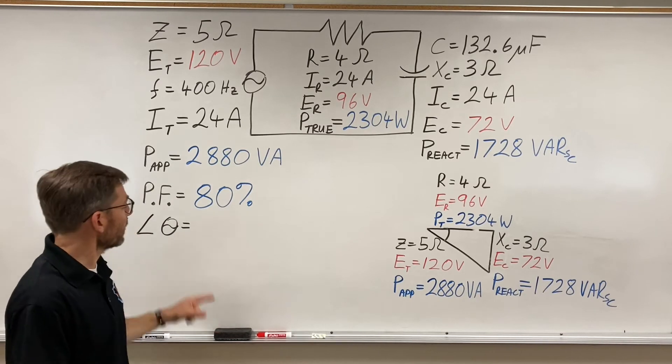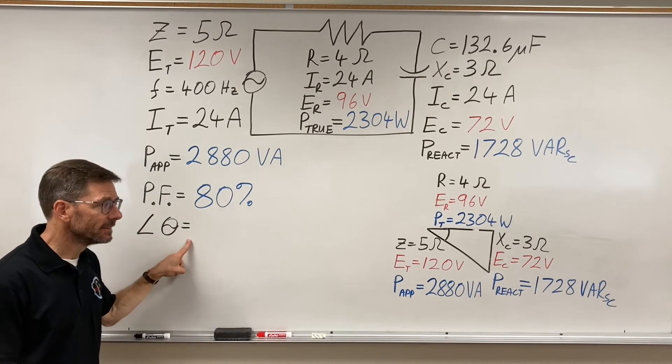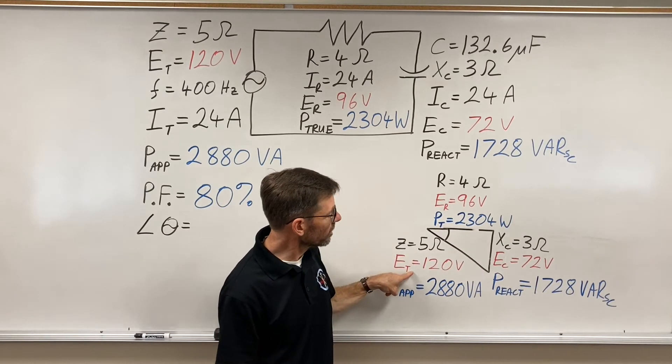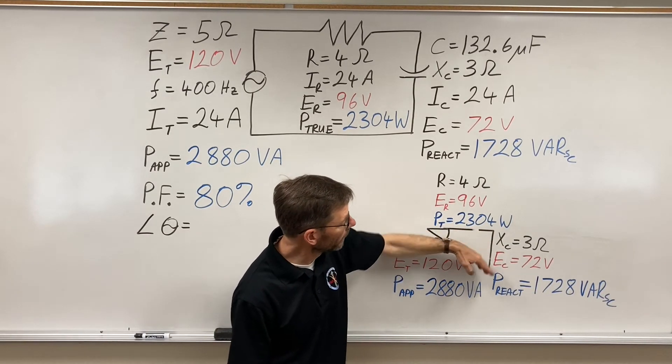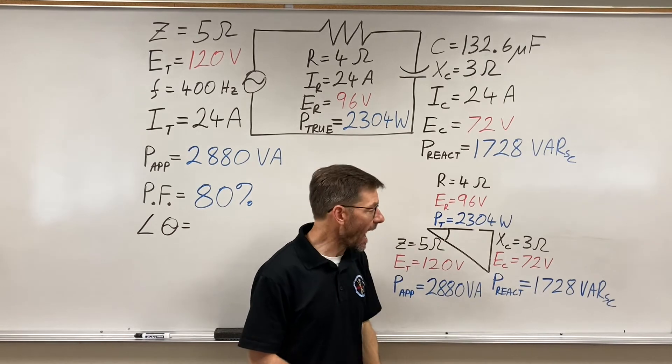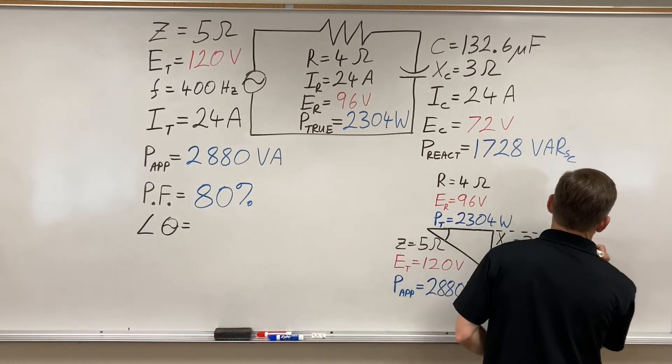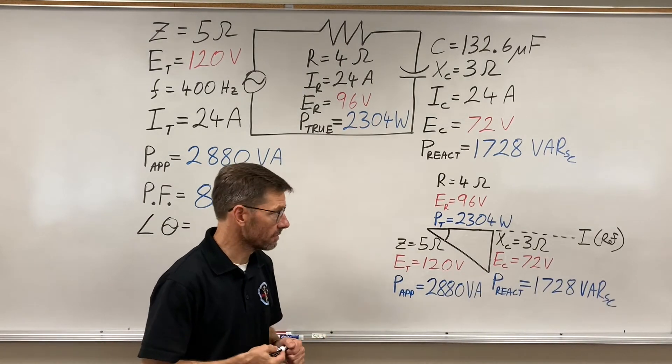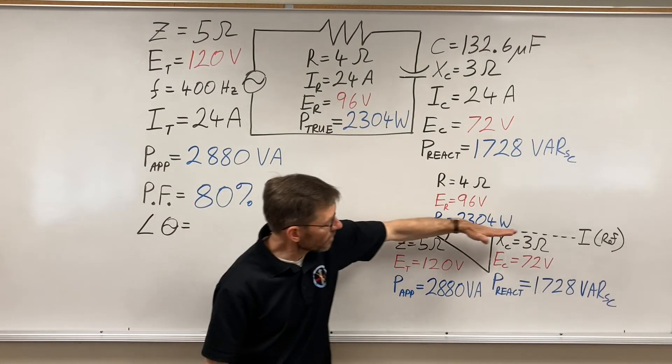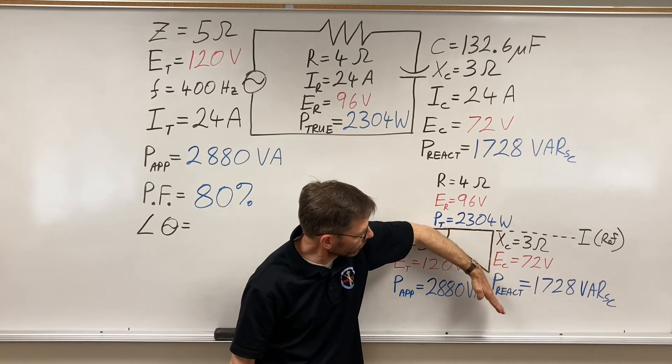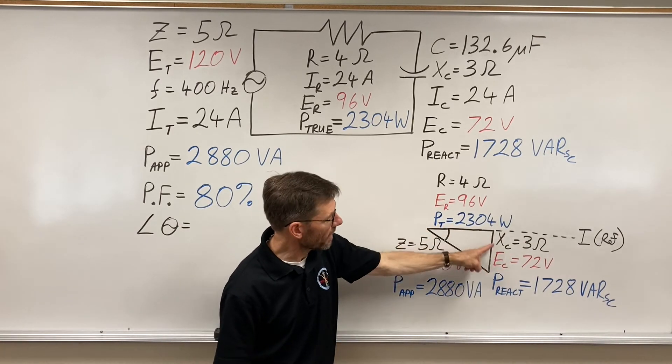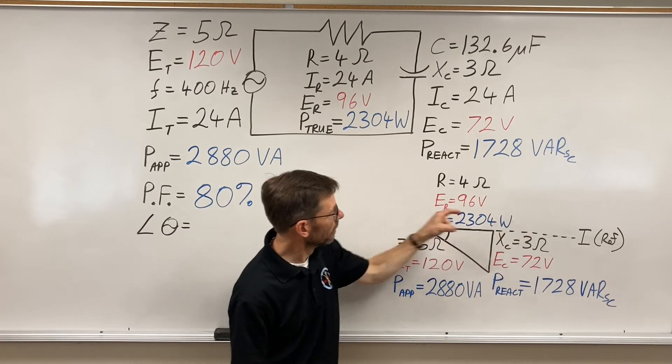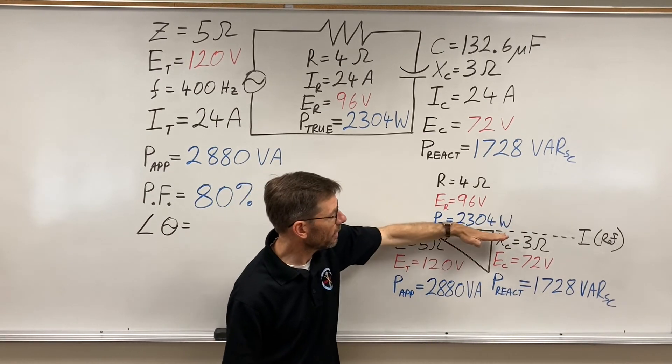The last thing we want to figure out is this angle theta. So, by how many degrees does this total voltage hang back from the current? I'm going to write the current as my reference. That's where the current is. This is total voltage. Capacitive voltage, 90 degrees out with current. Resistive voltage, in phase with it.